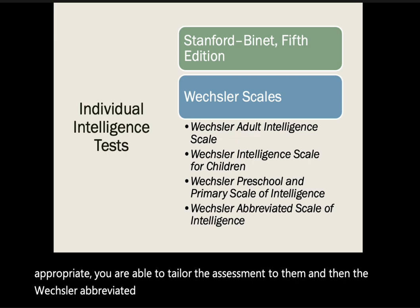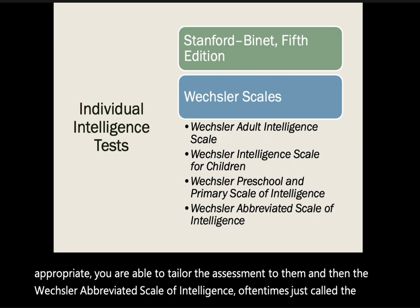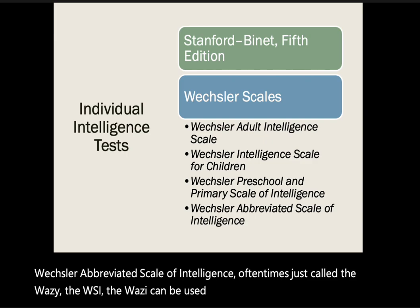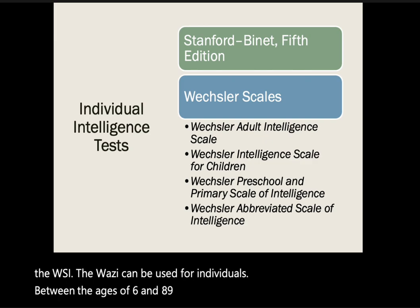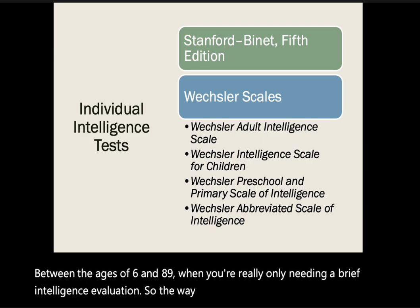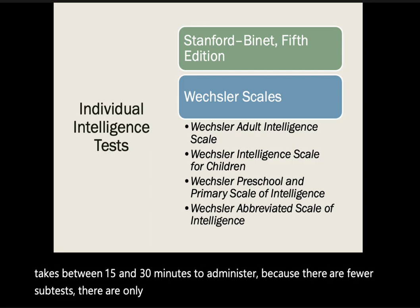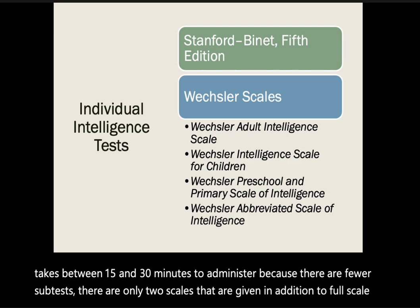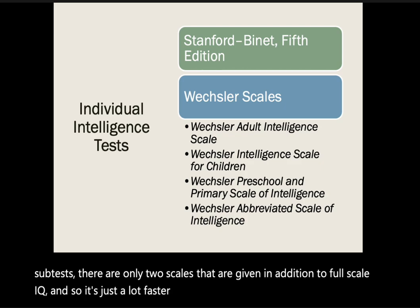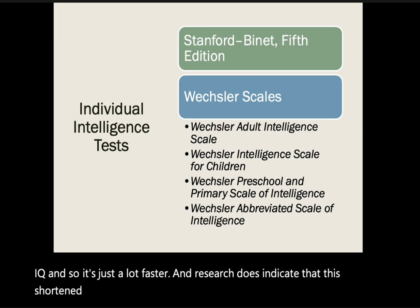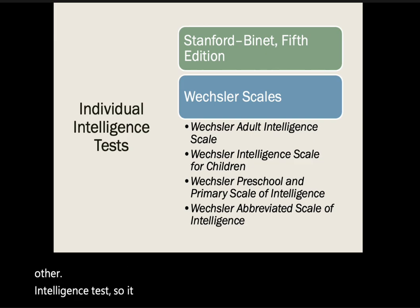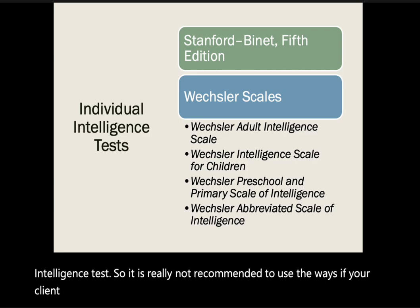The Wechsler Abbreviated Scale of Intelligence, or WASI, can be used for individuals between the ages of 6 and 89 when only a brief intelligence evaluation is needed. Published in 1999, it takes between 15 and 30 minutes to administer because there are fewer subtests — only two scales in addition to a full-scale IQ. Research does indicate that the shortened format impacts clinical accuracy compared to other intelligence tests, so it is not recommended if your client needs a more accurate measure of intelligence.